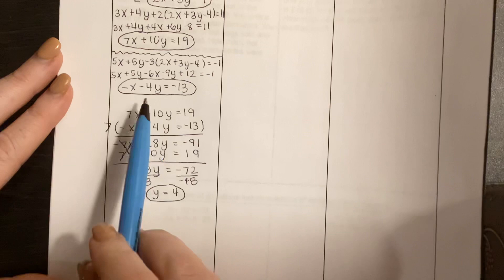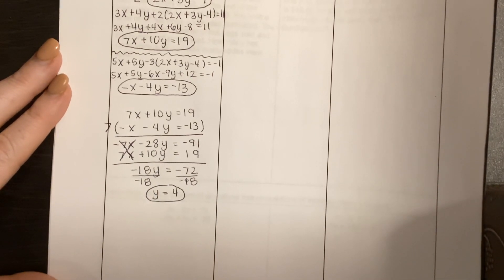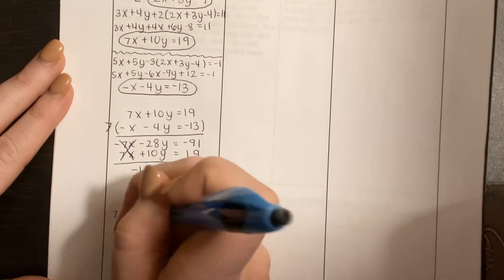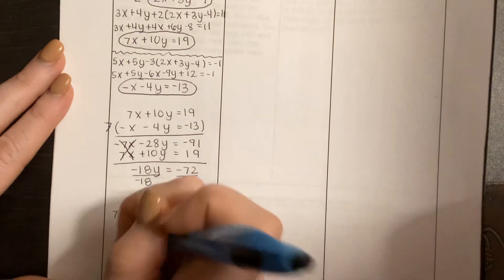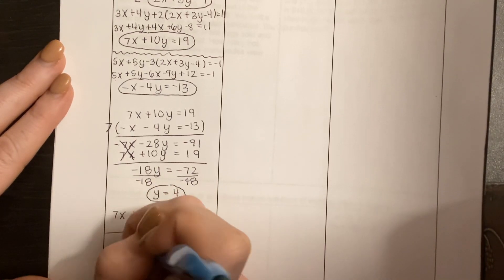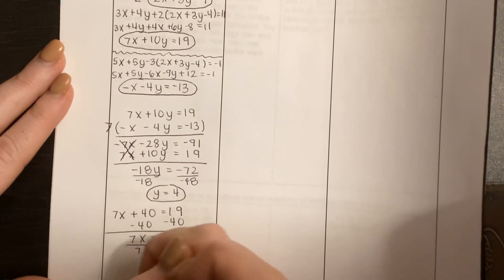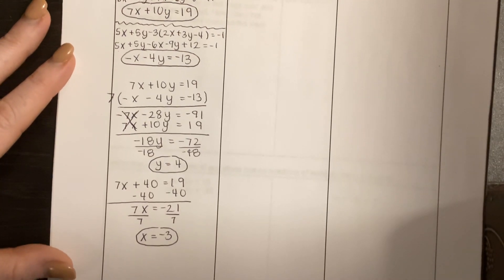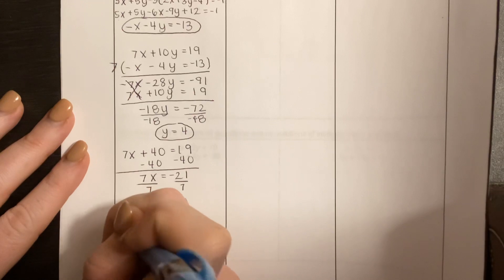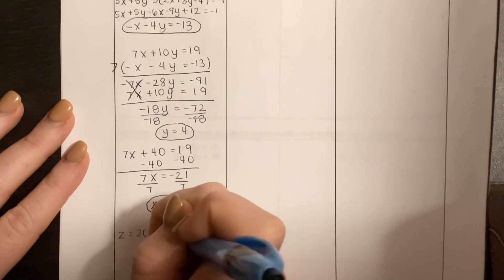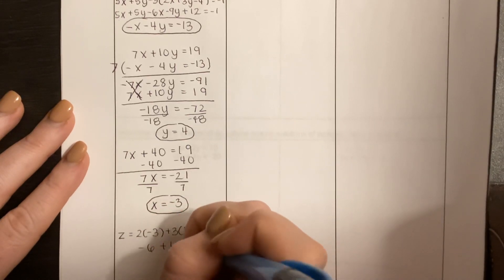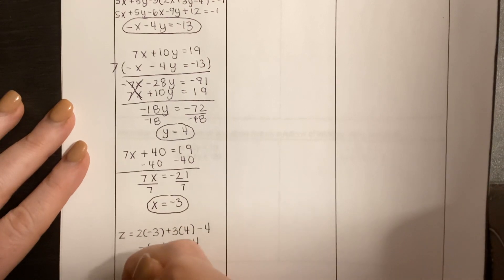Now you're going to take that and plug it into either one of these equations. I'm going to plug into the first: 7X plus 10 times 4 gives me 40, equal to 19. I'm going to subtract 40, and that gives me 7X is equal to negative 21. Divide by 7, and X is equal to negative 3. Now that you've solved your 2x2, you're going to take these two answers and plug them into this equation. So Z is equal to 2 times negative 3 plus 3 times 4 minus 4. This gives us negative 6 plus 12 minus 4, which is 12 minus 10, so Z is equal to 2.